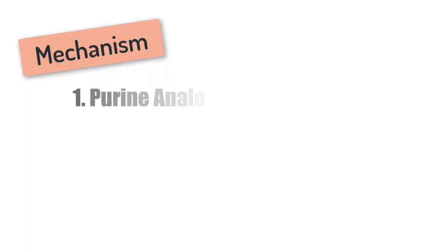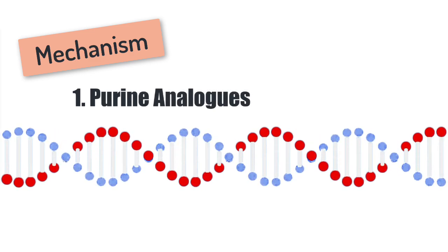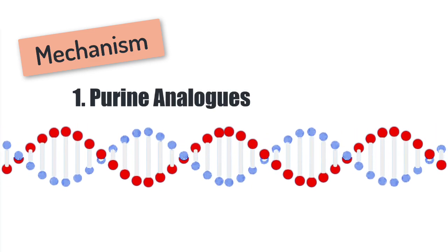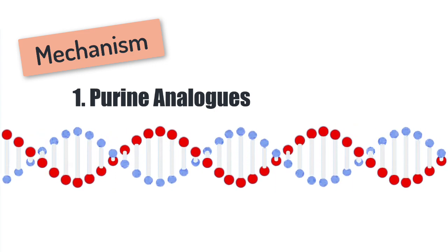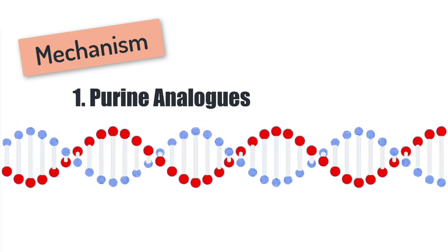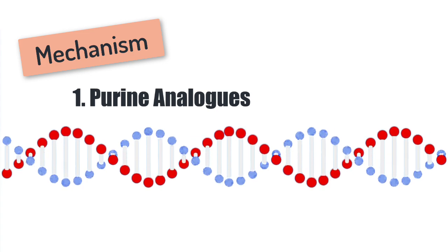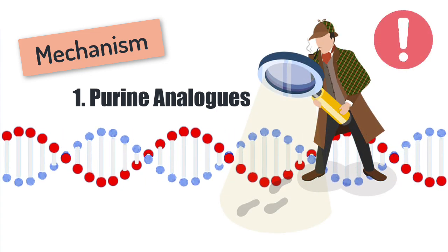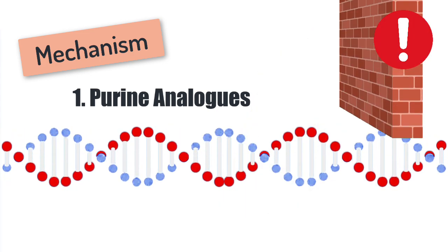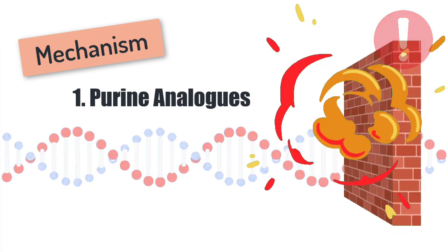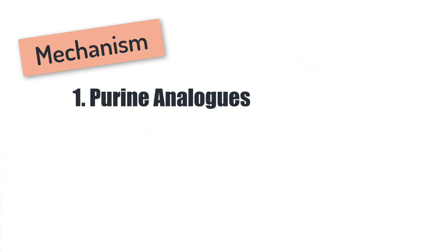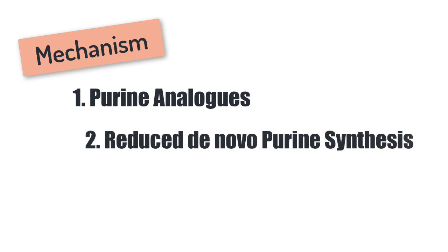Traditionally we are taught that these drugs work by forming purine analogs — molecules which look a lot like DNA. Because of this, they become incorporated into the DNA itself, and when the cell tries to replicate it realizes its DNA looks a bit funky, the cell cycle aborts and the cell undergoes apoptosis. But there's actually more to this story. Azathioprine also reduces the formation of healthy DNA building blocks, making it even harder for the cell to proliferate.